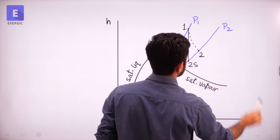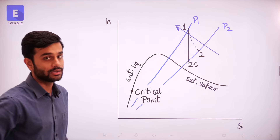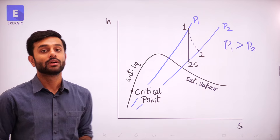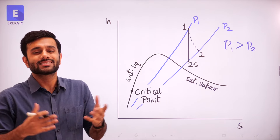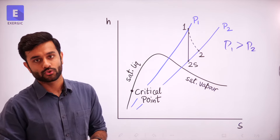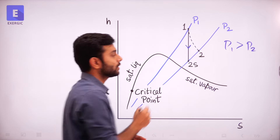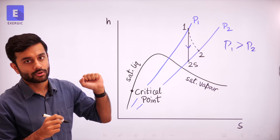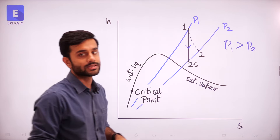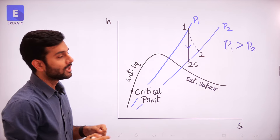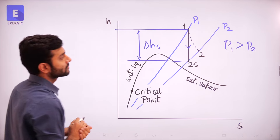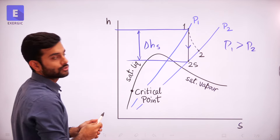This is an expansion process going on — isentropic expansion from point 1 to point S, where S represents the isentropic process. This is a reversible isentropic process, but the actual process can be different and is represented by a dotted line, as we know irreversible processes are shown by dotted lines. For finding delta H for the isentropic process, this is going to be H1 minus H2S.